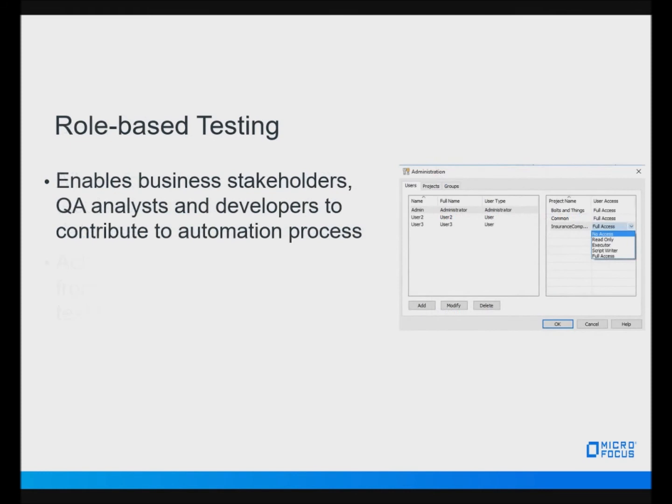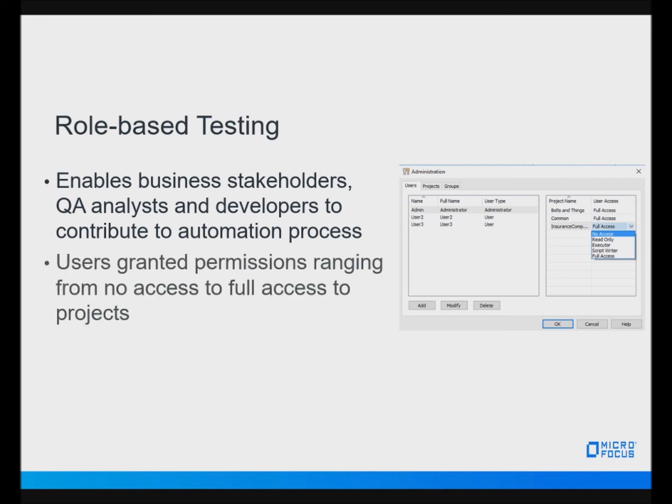Silk Test's role-based testing enables business stakeholders, QA analysts, and developers to contribute to the whole automation testing process. Administrators can create users and grant them permissions in order to control access to certain projects and rights regarding the creation, modification, or playback of the tests.